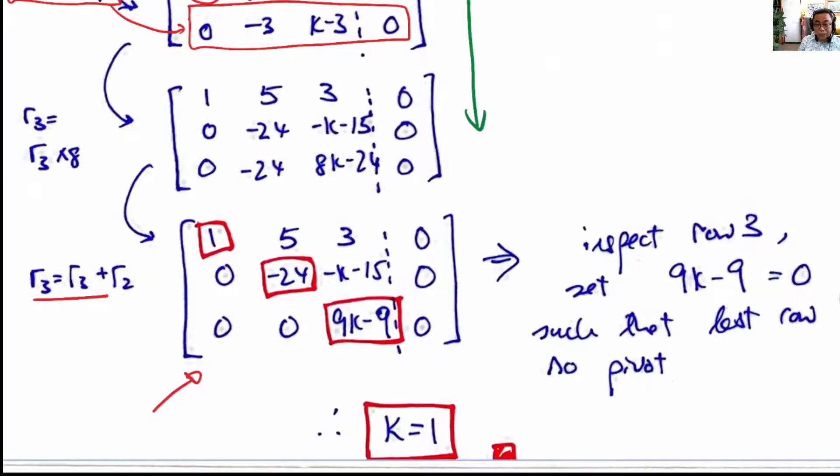This matrix is in row echelon form because we have the following shape: we have zeros in the front of each row. The lower the row, the further the entries are that are non-zero on the right.